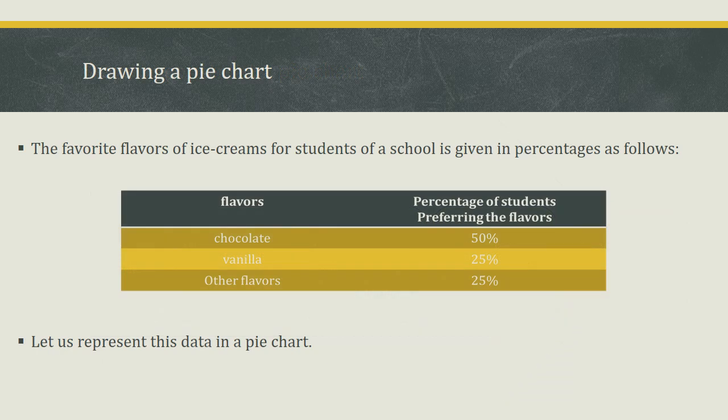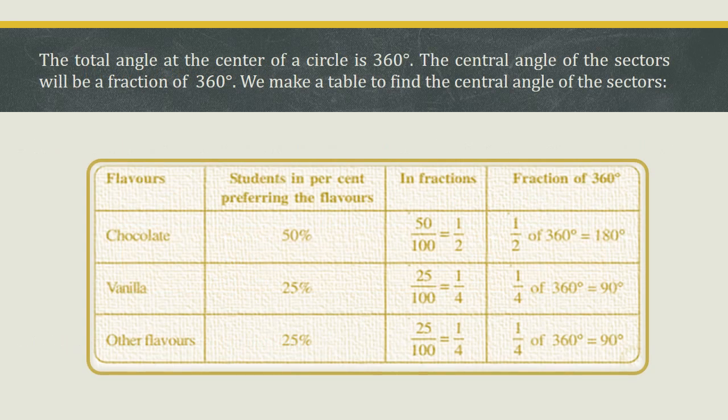The favorite flavors of ice cream for students of a school are given in percentages. The flavors are chocolate at 50%, vanilla at 25%, and other flavors at 25%. Let us represent this data in a pie chart. The total angle at the center of a circle is 360 degrees. We make a table to find the central angle of each sector.